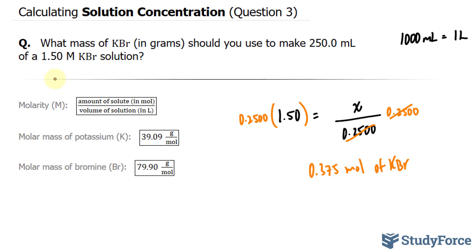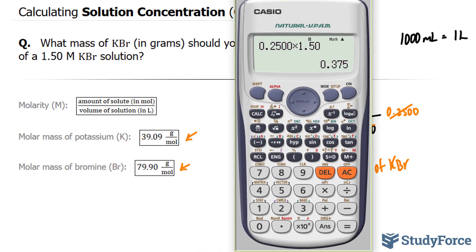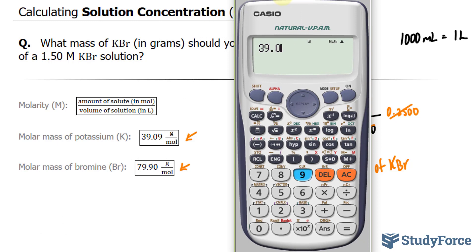Next, what I have to do to find the mass is find the molar mass of KBr. And to do that, I'll use the following two values. KBr has one potassium and one bromide. So I'll add 39.09 plus 79.90, and that will give me the molar mass. 39.09 plus 79.90 gives us 118.99.